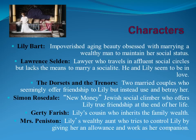The main character is Lily Bart, an impoverished, aging beauty obsessed with marrying a wealthy man to maintain her social status. At the beginning of the novel she's 29, similar to Anne Elliot—there's a limited window when these women can marry before they're considered too old. Lawrence Selden is a lawyer capable of socializing in affluent circles, but he lacks the means to marry a socialite. He and Lily seem to be in love, but both understand he could not support her in the lifestyle she desires.